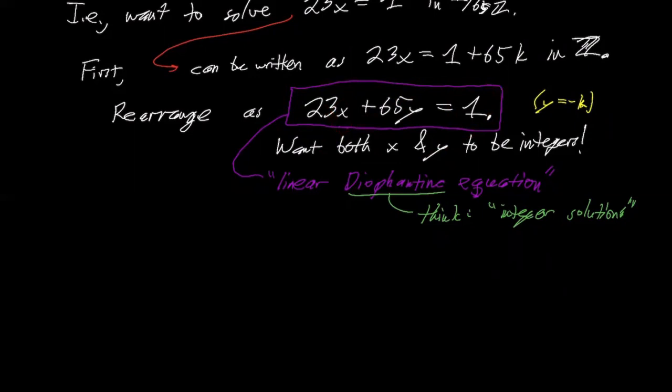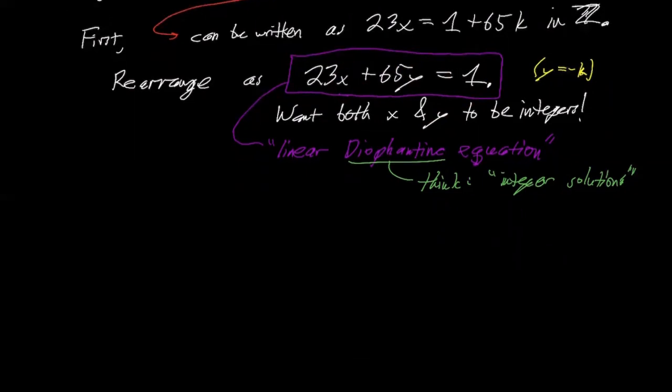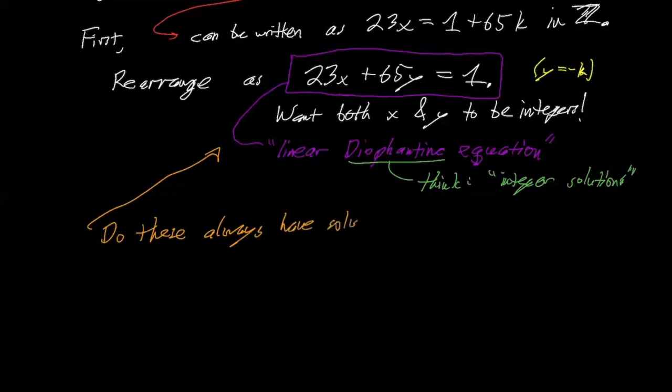The second thing is, how do we even know a solution exists? Does every element... I'm going to table actually finding the solution. We're going to come up with a nice algorithm. There's a couple nice algorithms. But let me first just mention how do we know? Do we know 23 actually has an inverse mod 65? So there's this question of do these always have solutions?